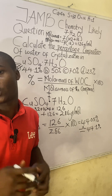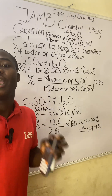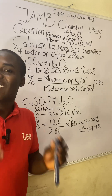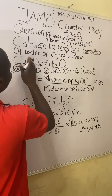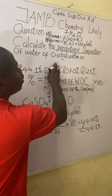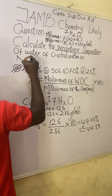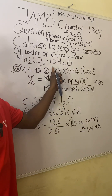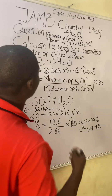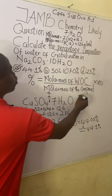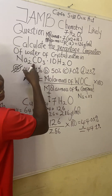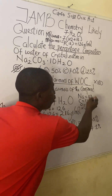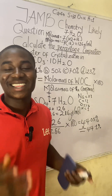If you found this video helpful, click subscribe on YouTube or follow on TikTok, and share with your friends. Here is your practice question: the compound Na₂CO₃·10H₂O — find the percentage composition of water of crystallization. The atomic masses are: sodium = 23, carbon = 12, oxygen = 16, hydrogen = 1. Solve it and provide your answer in the comments.